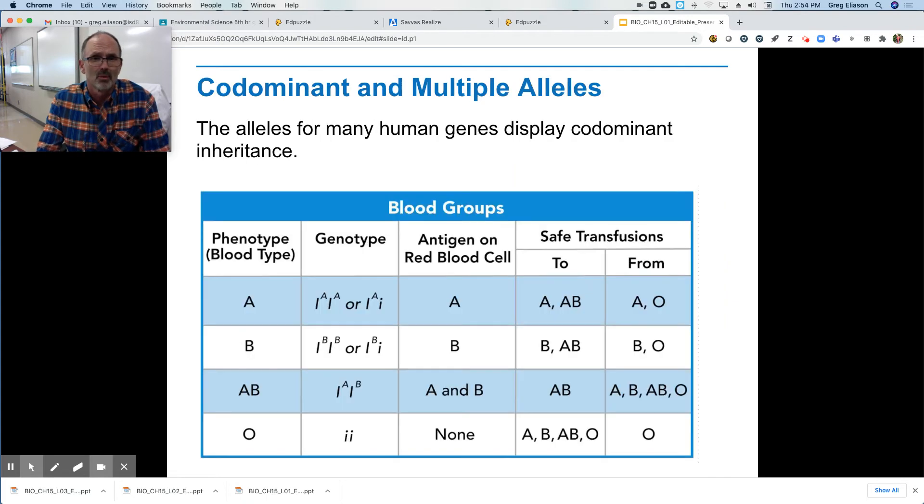And there's combinations of those co-dominant and multiple alleles. We went over this when we were doing genetic problems that we have the different blood typing and all of these alleles,